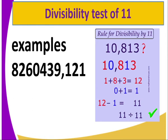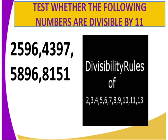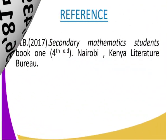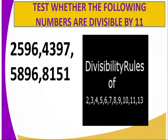For the divisibility test of 11, you can test whether the following numbers are divisible by 11: 259,643,9 and also 596,815,1. You just get the alternate numbers. This is the activity where you are required to test whether these numbers are divisible by 11.